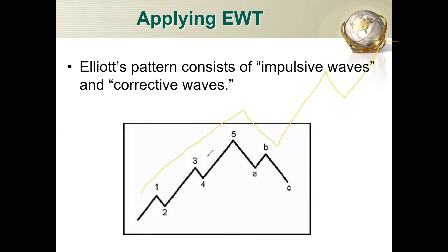What we call the Elliott Wave is labeled as 1, 2, 3, 4, 5, A, B, C. The A, B, C are the corrective waves, and 1, 2, 3, 4, 5 are the impulsive waves. Among the smaller waves, whenever you see a retracement, that is also a corrective wave. The impulsive wave represents the main trend direction.